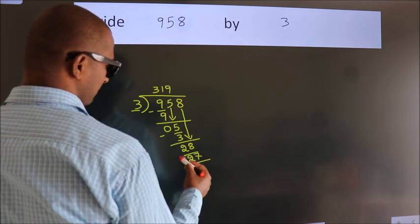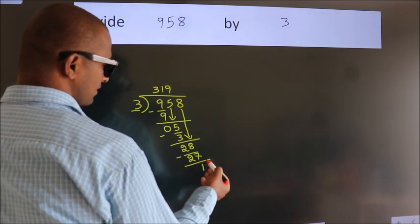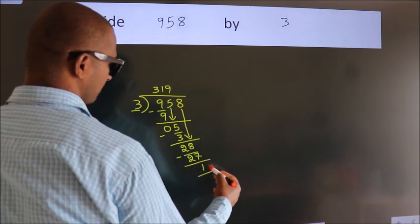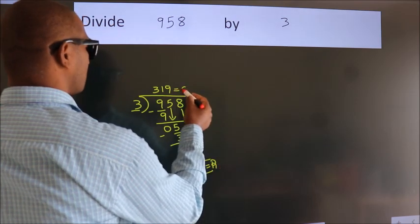Now we subtract. We get 1. After this, no more numbers to bring down, so we stop here. This is our remainder. This is our quotient.